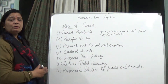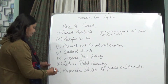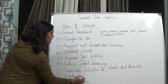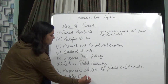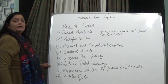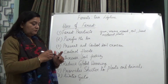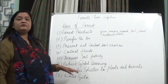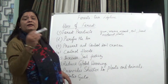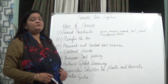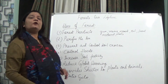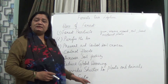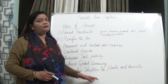Forests also play a great role in the water cycle. The trees transpire — the leaves of trees, herbs, and shrubs carry out transpiration, and water is lost in the form of water vapor. This forms clouds and then precipitates as rain. So forests also play a great role in the water cycle.